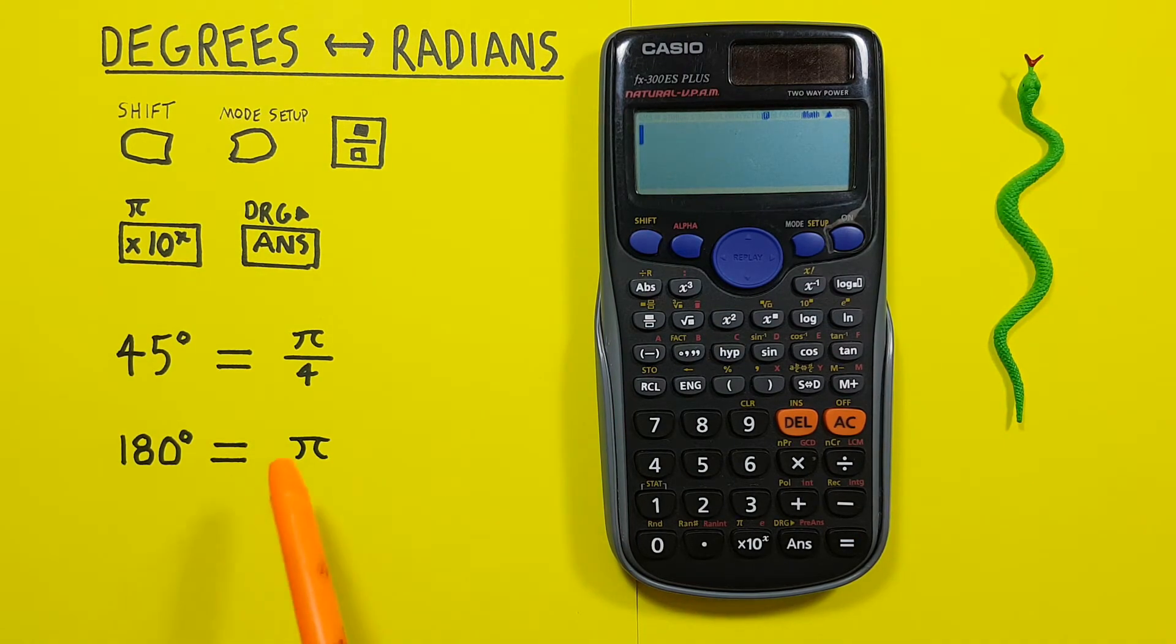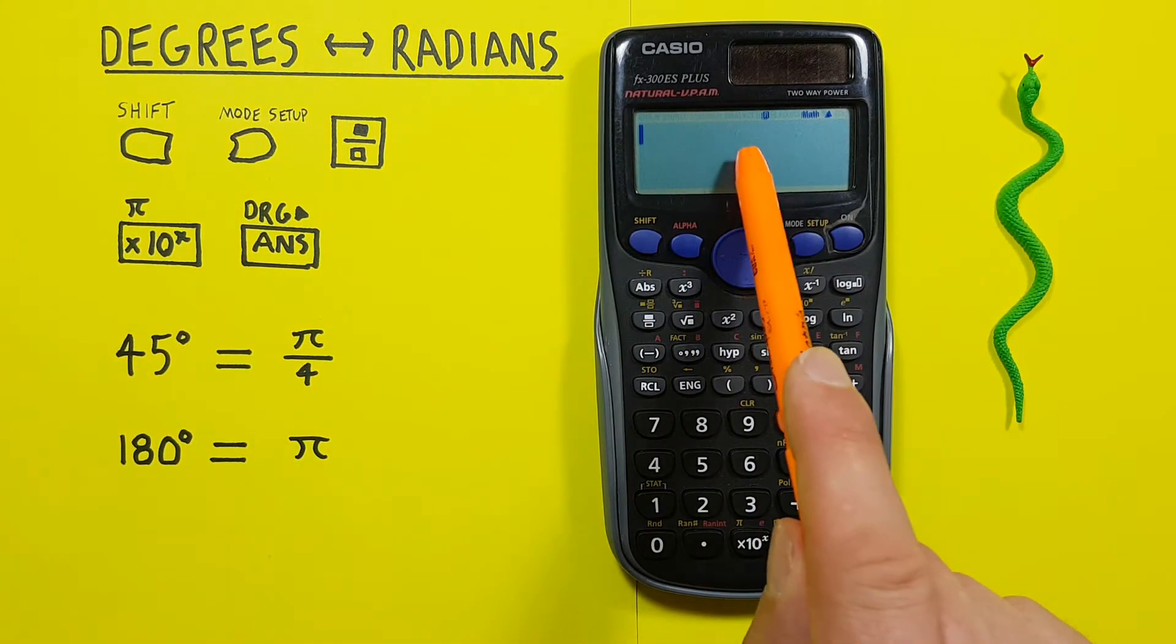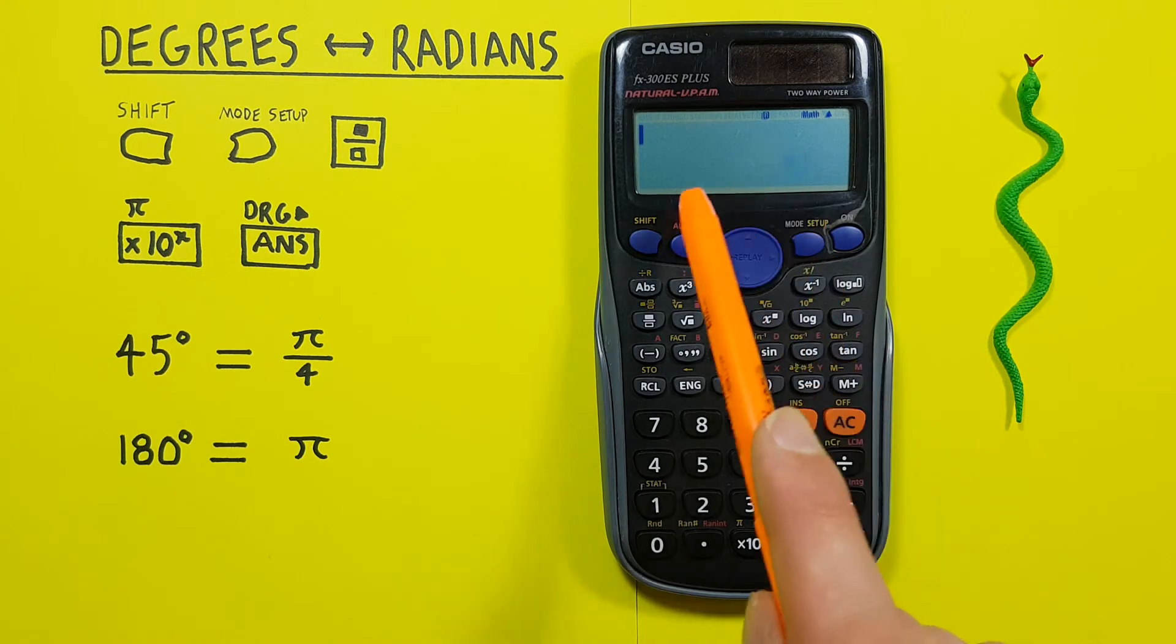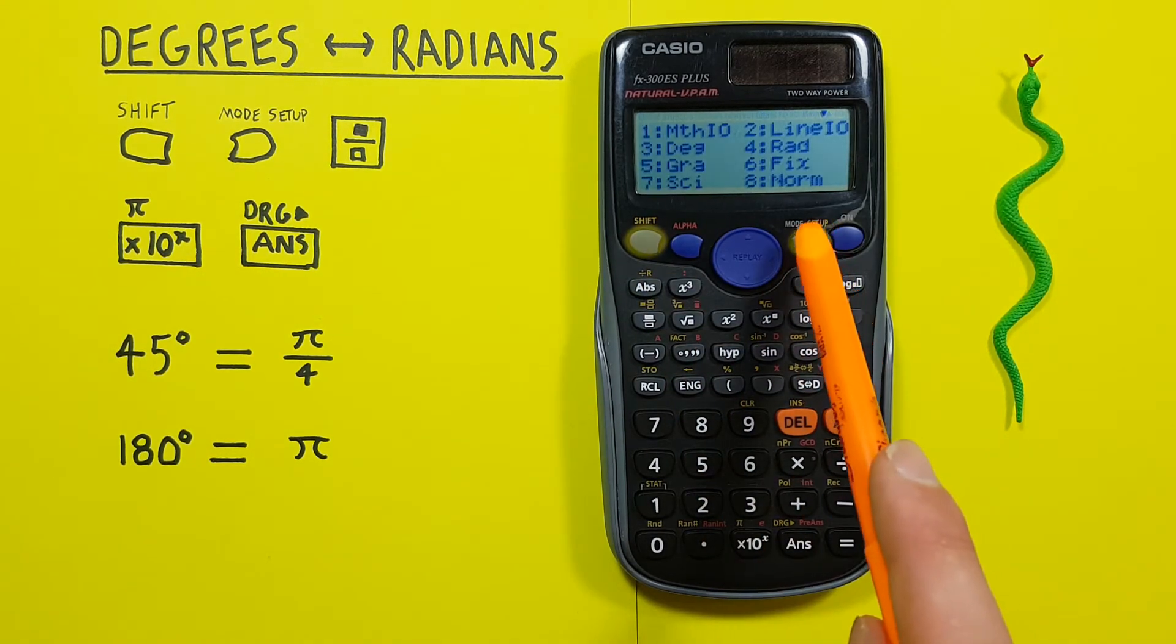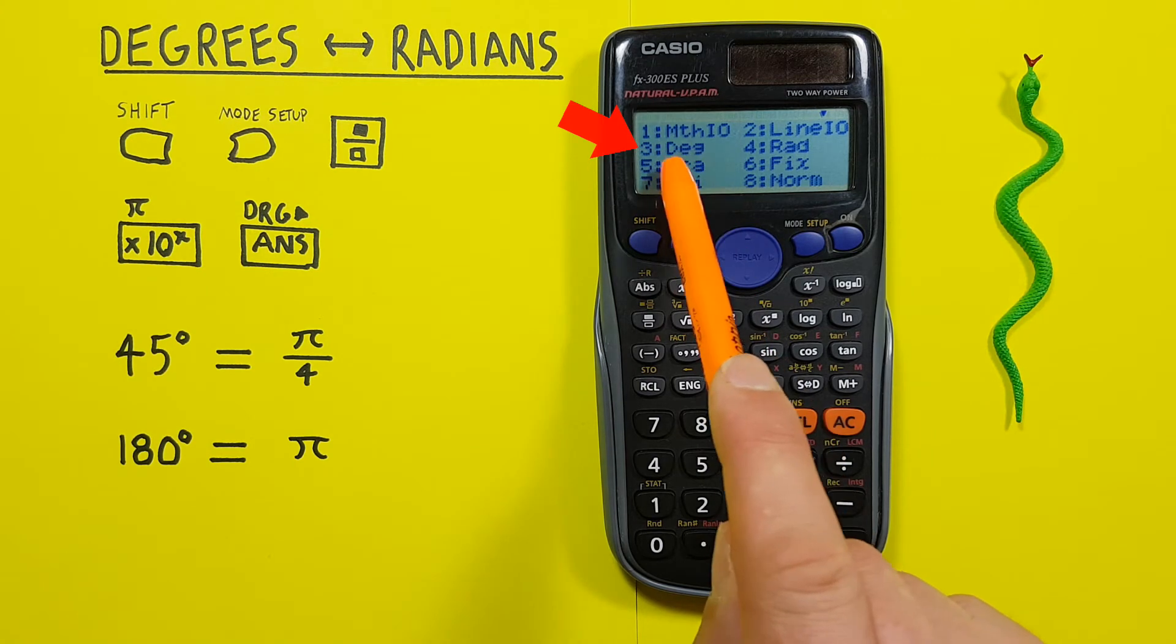What if we're given radians and want to convert that to degrees? Again, we start by setting our calculator to the mode we want our results in. So we press Shift, mode, and then select number 3, degrees, because that's what we want our results in.